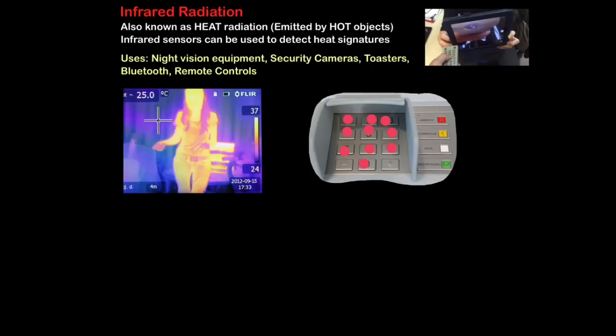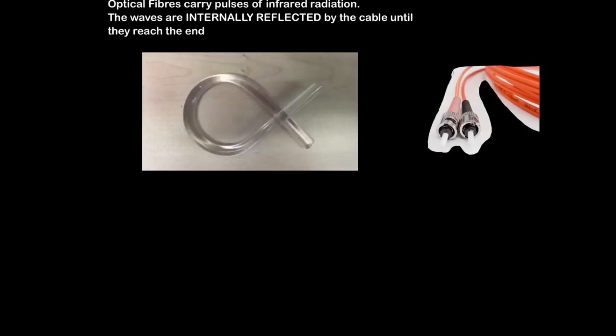Also very popular in video games and films we can use it for night vision equipment. So you can see this is a dark room or you can imagine it's a dark room and you can see the heat source where it's hottest it's glowing brighter. We can use it for security cameras. We can use infrared radiation for toasters which I'll show you in a second. Bluetooth and remote controls which I've already shown you if you remember this clip here. That's infrared. And if you enjoy cable TV you can thank infrared radiation for that.